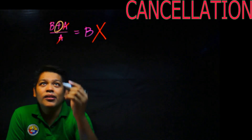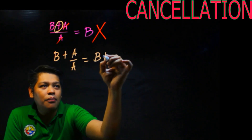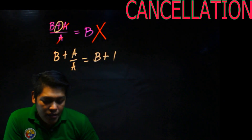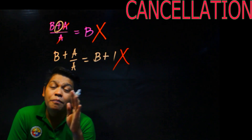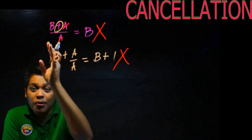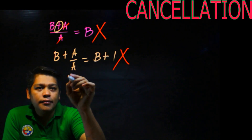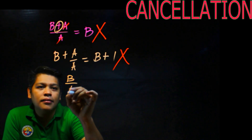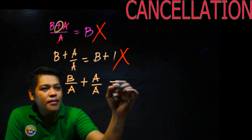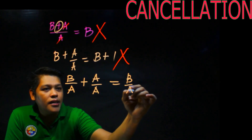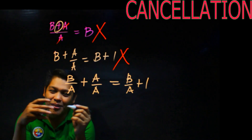Others do it this way: because B + A is in the numerator, they split it as B plus A over A, then say A over A equals 1, so the answer is B plus 1. That's clever-looking but also wrong. The correct approach is to separate the denominator for each term in the numerator. So (B + A) over A becomes B over A plus A over A, which equals B over A plus 1. That is the correct answer.